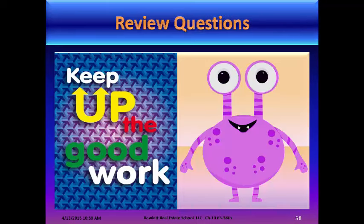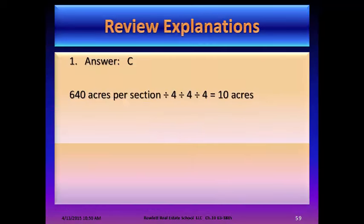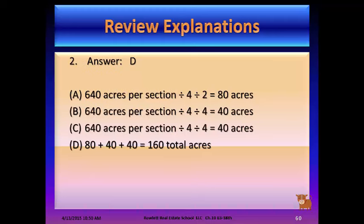Review question 1, answer C: 640 acres per section divided by four three times for three different quarters equals 10 acres. Question 2, answer D: 640 acres divided by a quarter and a half equals 80 acres.